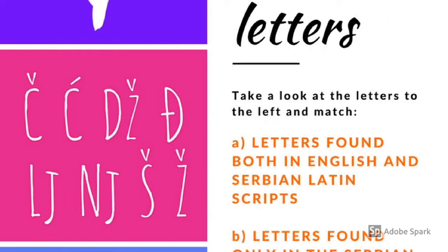The second box represents the letters that exist in the Serbian Latin script but not in the English script. It is important to understand that the signs above the letters are not any kind of accent or stress — they are just the design of those letters.